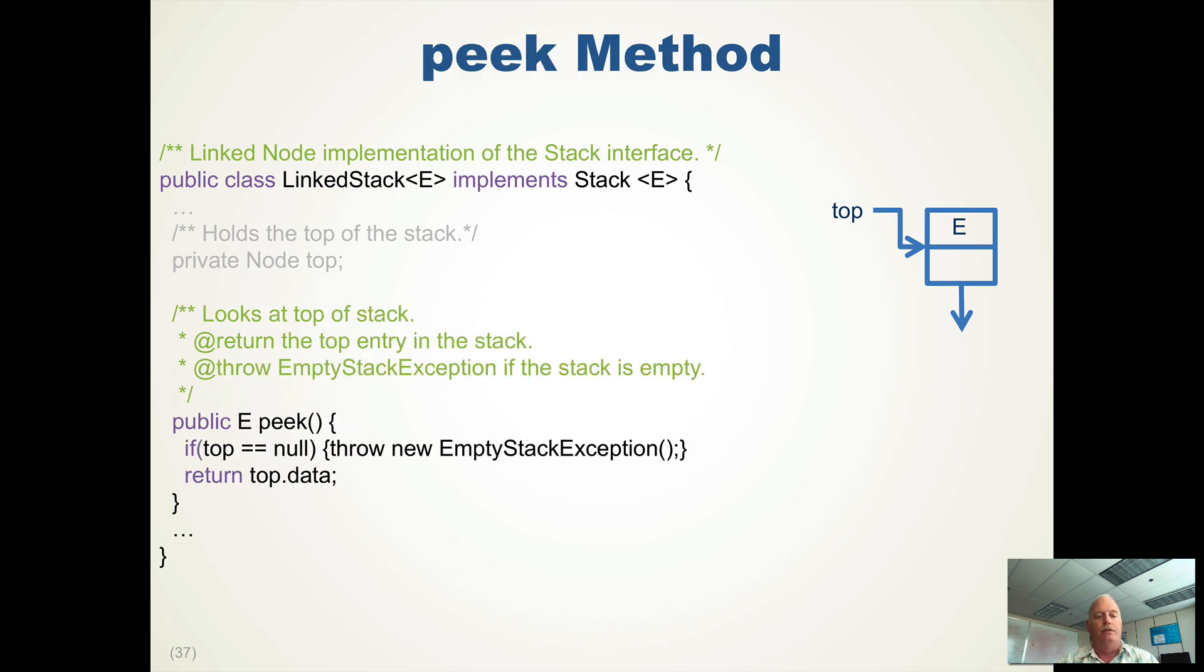Peak, we just check to see again if top is, or if the stack is empty, or top is null. We throw an empty stack exception, and we return top.data, not affecting the stack at all.